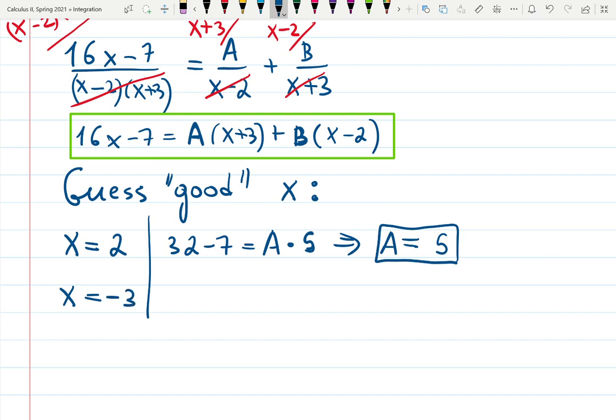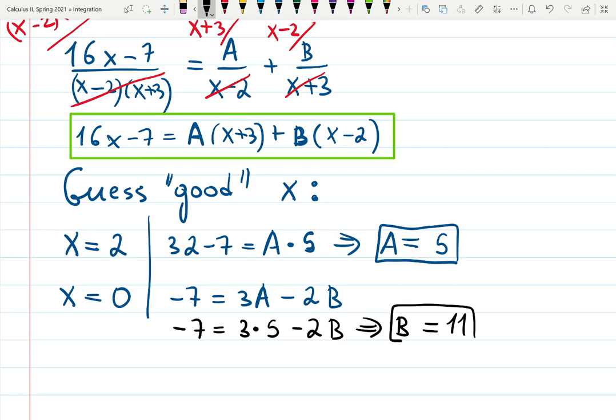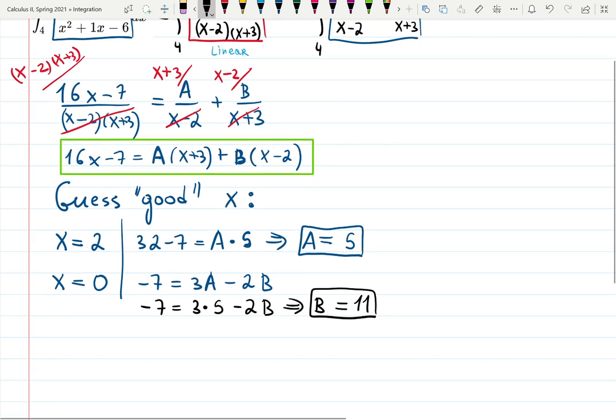Minus 3 looks like a good idea but actually even 0 is a good idea. Let's try 0 for example as an input. Then it's going to be 16x gives you 0, minus 7 equals 3A minus 2B. But we know A already, so it's actually minus 7 equals 3 times 5 minus 2B, and then B follows from here. Minus 7 and minus 15 divided by minus 2 gives you 11. Put it in the box. We found A and B really fast by just making good guesses.